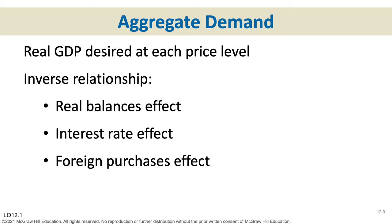The last reason is the foreign purchases effect: people in other countries buying the goods and services we produce here — our exports. If our price level is coming down, it makes sense that foreigners will purchase more of our GDP. So these three reasons — the real balances effect, the interest rate effect, and the foreign purchases effect — explain the downward sloping aggregate demand curve, and they're different from those for a single-product demand curve.